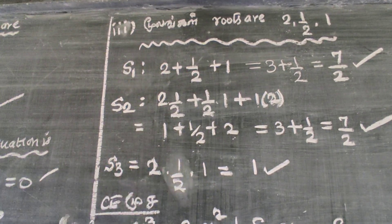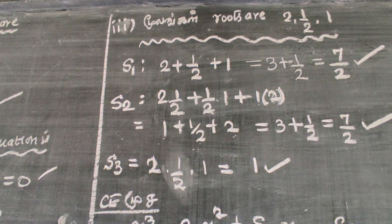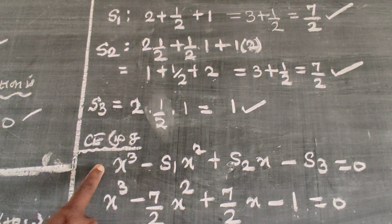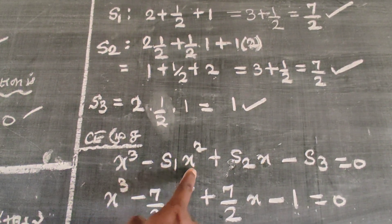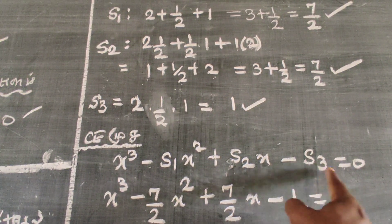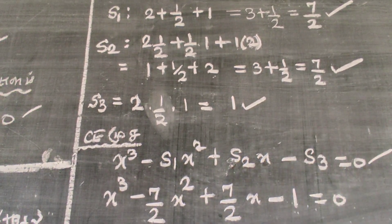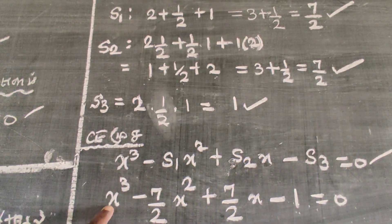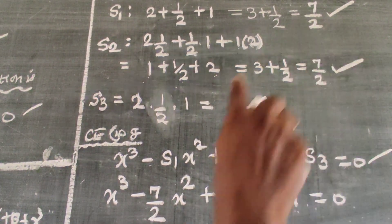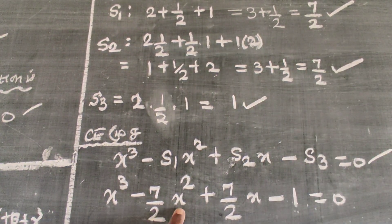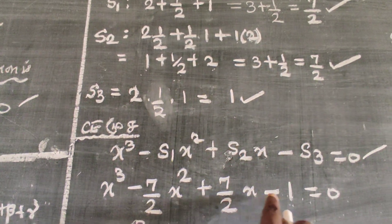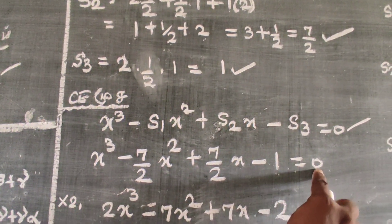So S1 equals 7 by 2, S2 equals 7 by 2, S3 equals 1. Substituting into the cubic formula: x cube minus 7 by 2 x square plus 7 by 2 x minus 1 equal to 0. Multiplying through by 2 gives the final cubic equation.